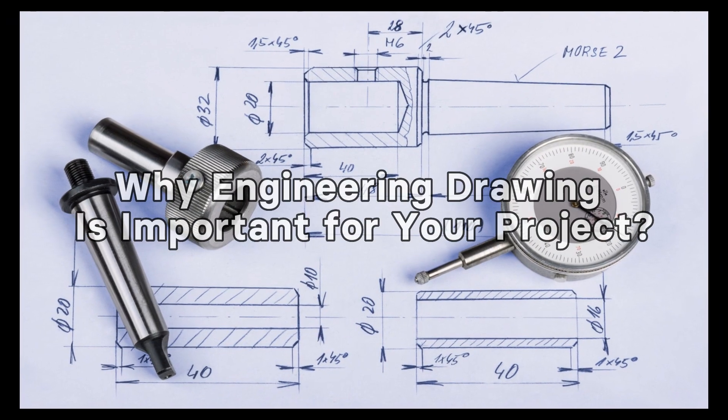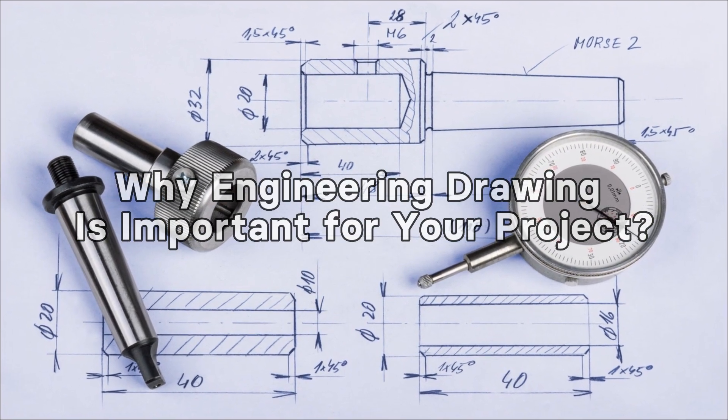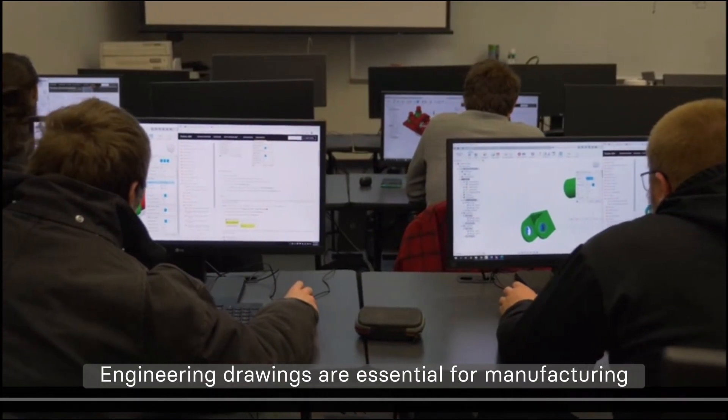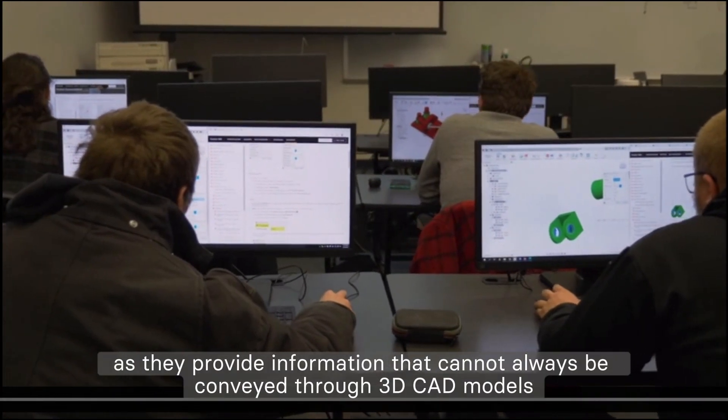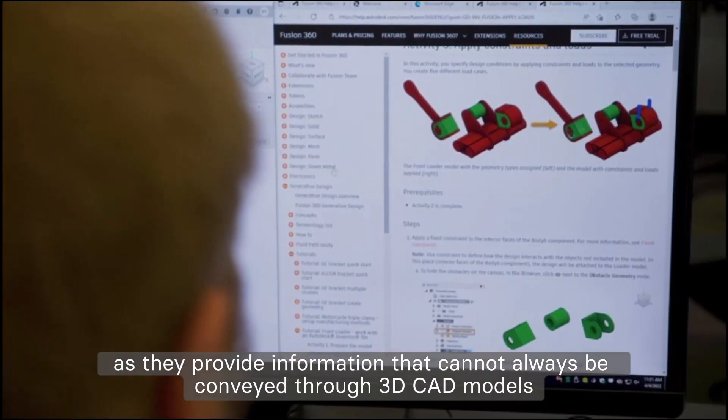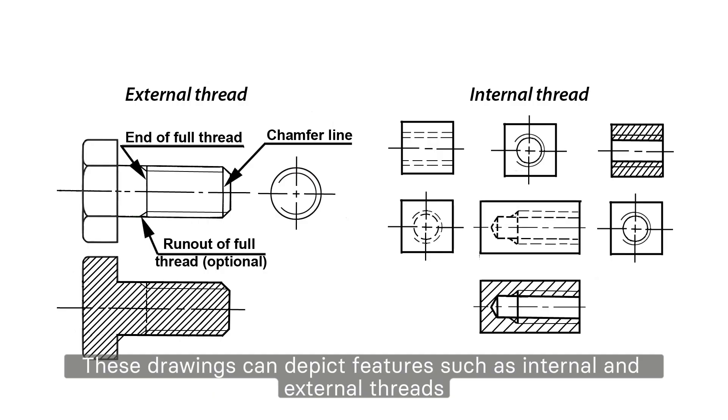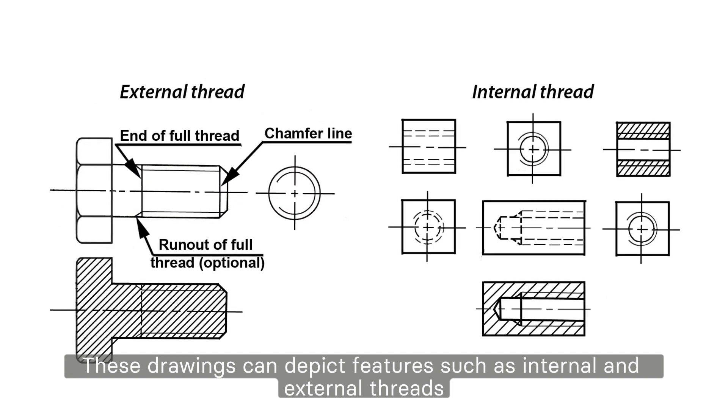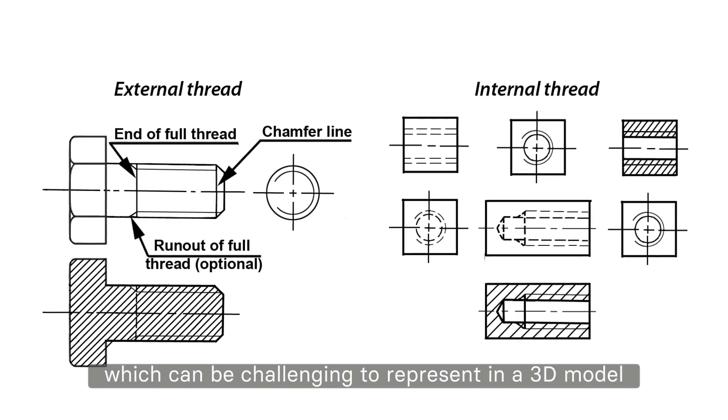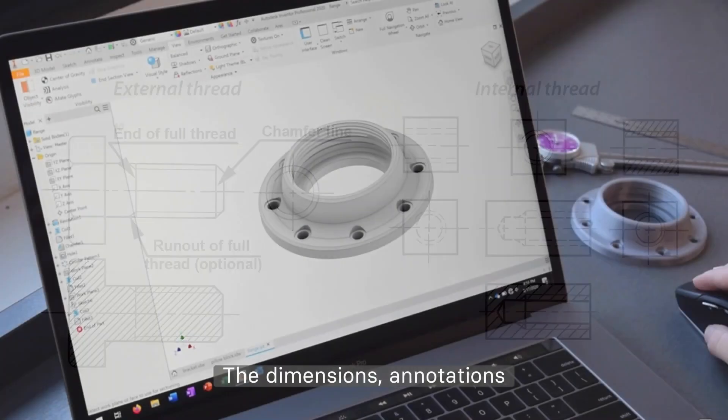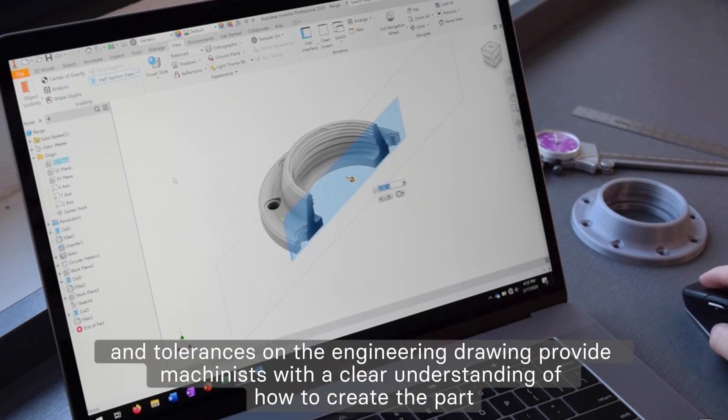Why engineering drawing is important for your project? Engineering drawings are essential for manufacturing, as they provide information that cannot always be conveyed through 3D CAD models. These drawings can depict features such as internal and external threads, which can be challenging to represent in a 3D model. The dimensions, annotations, and tolerances on the engineering drawing provide machinists with a clear understanding of how to create the part.